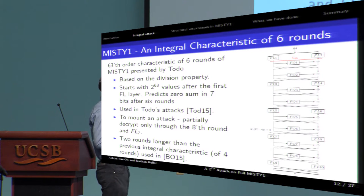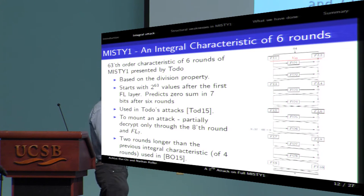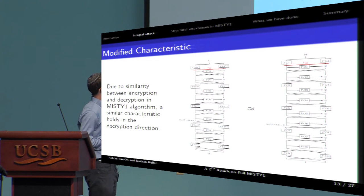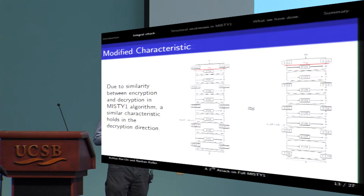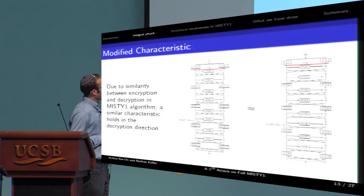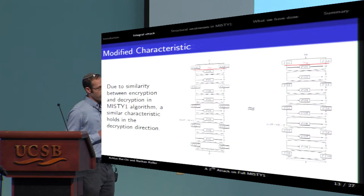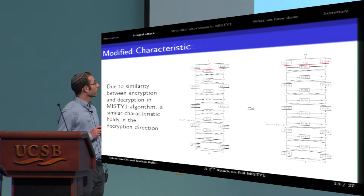And the attack equation predicts that the sum of two to the sixty-three specific values is zero in seven bits of the input to FL7. This means that if you get the relevant ciphertext, you need to decrypt just through the last round, and FL7 to check whether the attack equation holds. And this characteristic is used in Todo's attacks. We use an additional characteristic in our work. The additional characteristic is a modification of Todo's characteristic. Both characteristics look the same, but while Todo's characteristic starts at the plaintext side, the modified characteristic starts before the last FL layer, and ends after the second round.